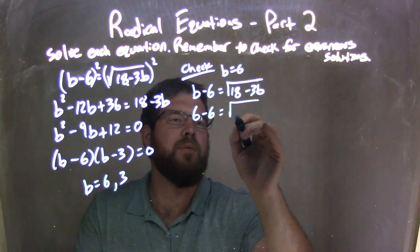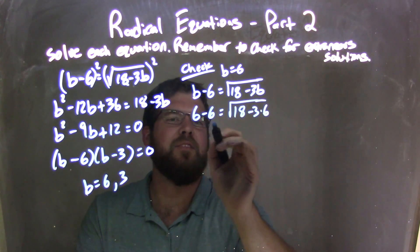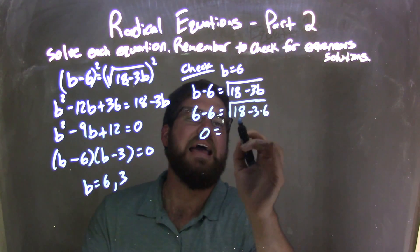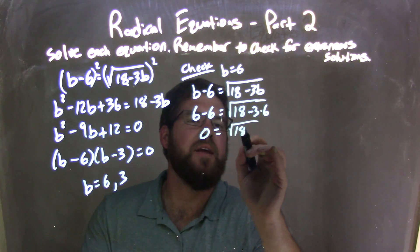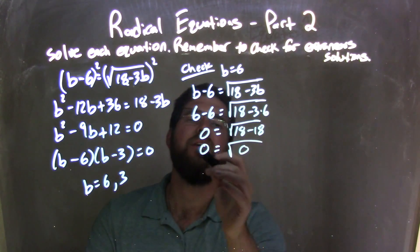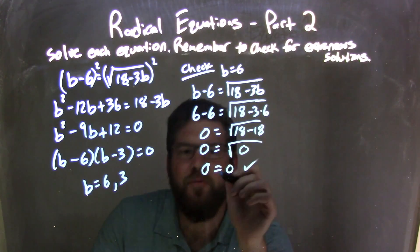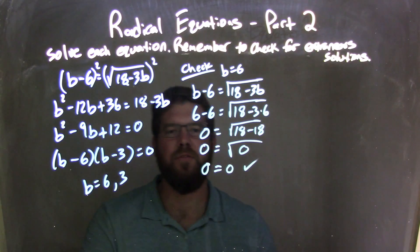6 minus 6 equals, well, 18 minus 3 times 6. 6 minus 6 is 0, fantastic. 18 here, what's 3 times 6? 18. Uh-oh, I'm seeing something. 0 equals square root of 18 minus 18 is 0, square root of 0 is just 0. So 0 equals 0, left and right hand side are equal. 6 is a real solution.